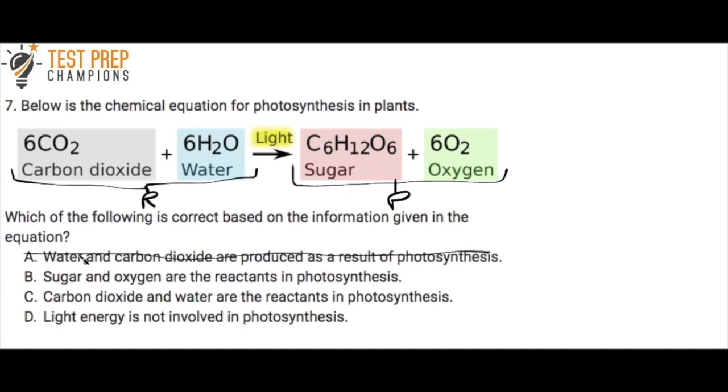B: Sugar and oxygen are the reactants in photosynthesis. Well, again, we know that the reactants are carbon dioxide and water and not sugar and oxygen, so B is also incorrect. So C says carbon dioxide and water are the reactants in photosynthesis. Carbon dioxide and water, yes. So this is actually the correct answer.